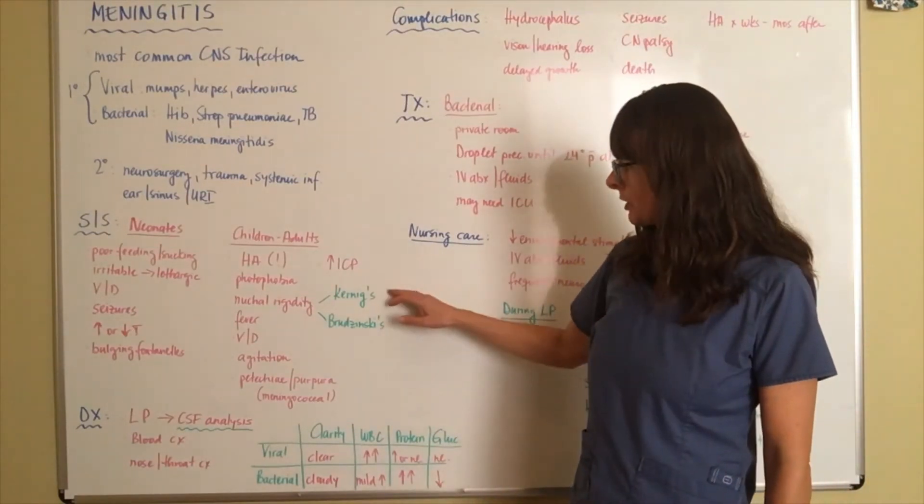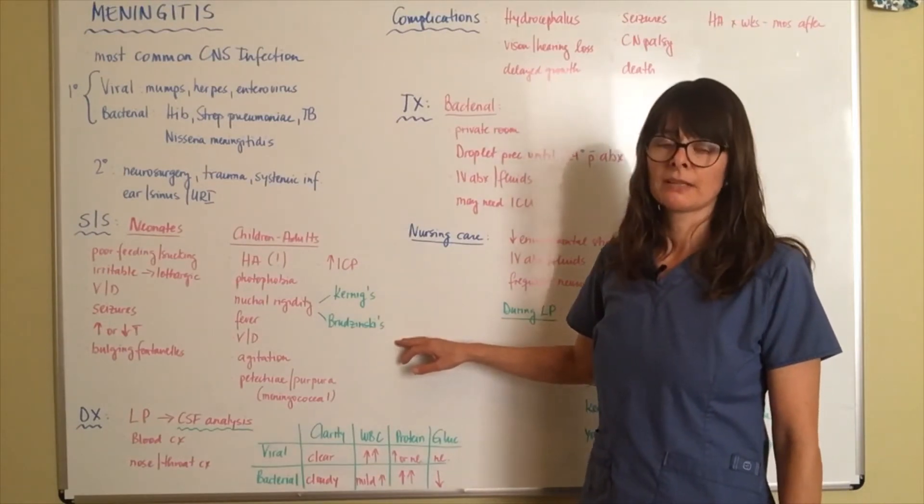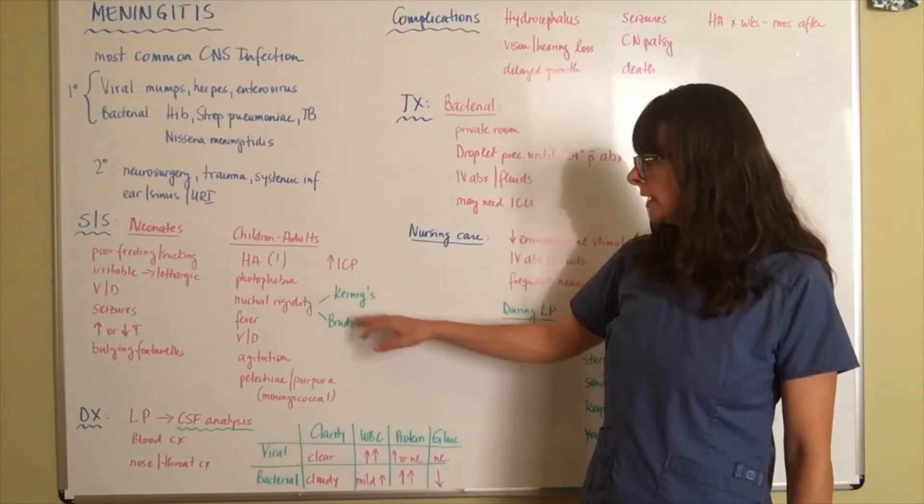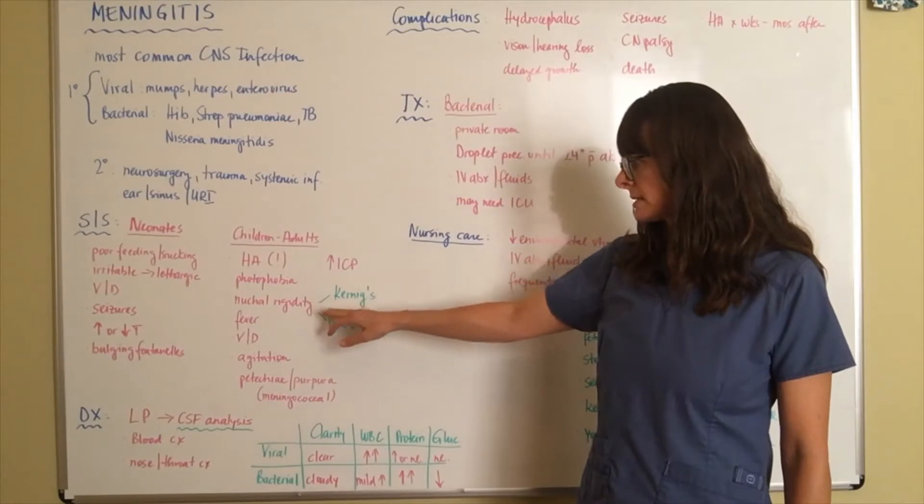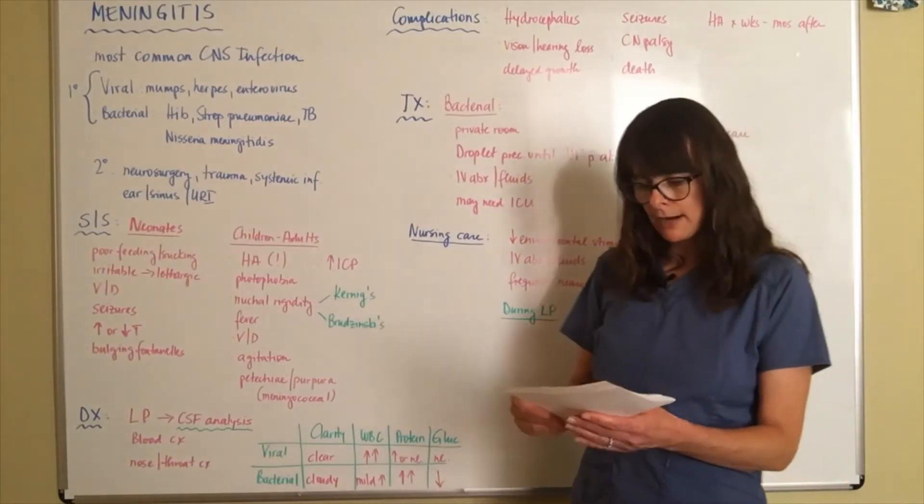There are two signs that are named after Mr. Kernig and Mr. Brudzinski that we can assess for in terms of this neck stiffness. So Kernig's sign is resistance to the extension of the legs with hip or knee flexion.